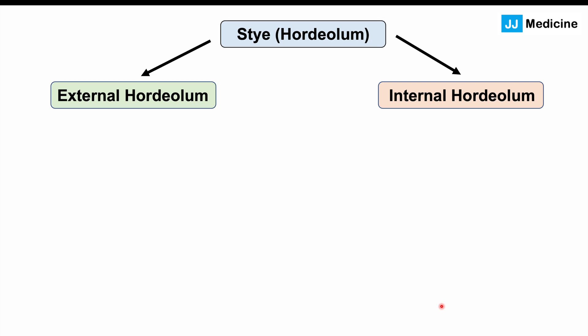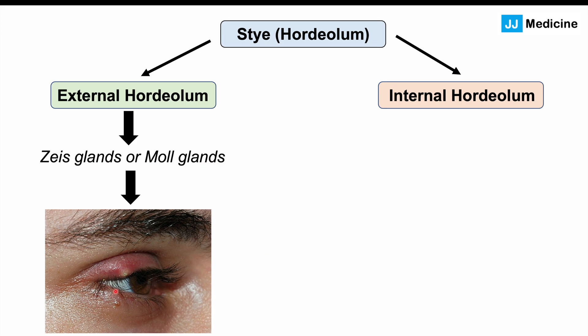The external hordiolum is the one we actually see — that little pus-filled raised lump on the eyelid. The types of glands affected in the external hordiolum are the Zeiss glands or the Moll glands, causing this external raised pus-filled bump on the outside of the eyelid.